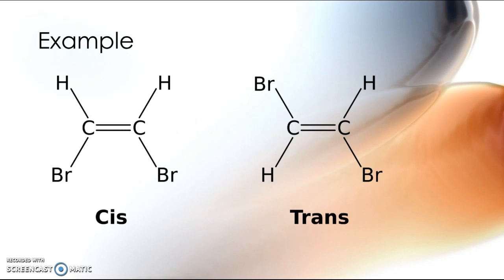Looking at cis-1,2-dibromoethene and trans-1,2-dibromoethene, the atoms are connected in exactly the same order — carbon 1 has a hydrogen and a bromine, and carbon 2 has a hydrogen and a bromine. However, these two molecules are not identical, especially when you consider that a bromine atom is about 70 times bigger than a hydrogen atom. If you built proper spatial models of them they would look completely different, even though they have the same atoms connected.